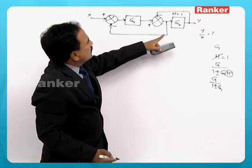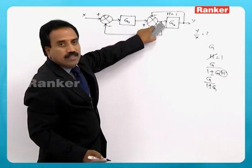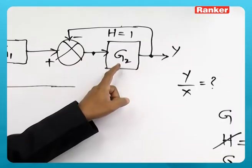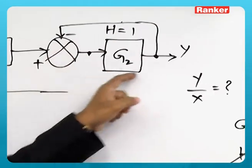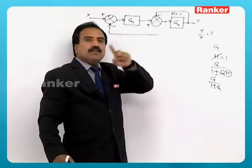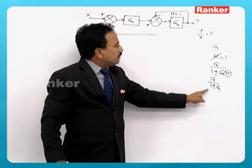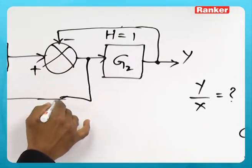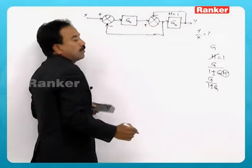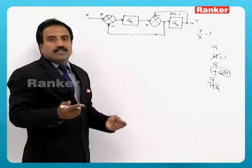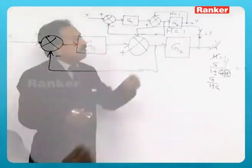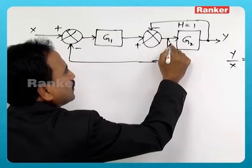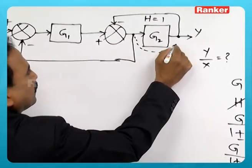If this takeoff point were not there, you could happily eliminate the G2 feedback loop with unity feedback by applying Rule 3: G by 1 plus G. But this takeoff point is creating the problem. So I must shift that takeoff point to after a block — there was a rule we already discussed for shifting a takeoff point to after a block.